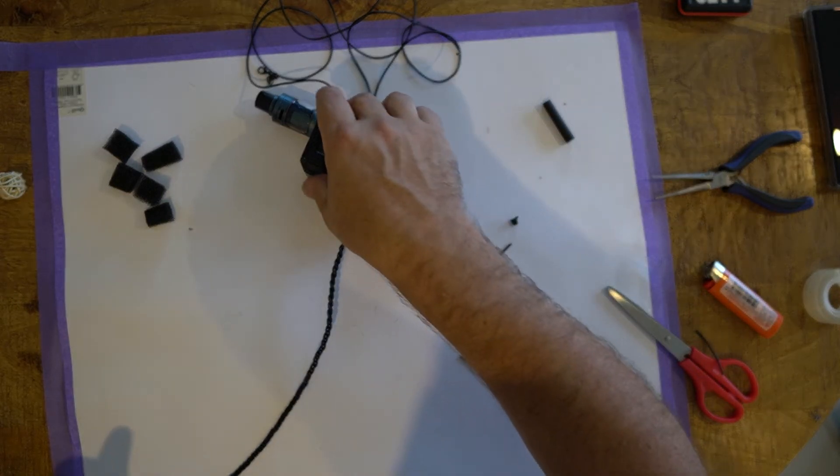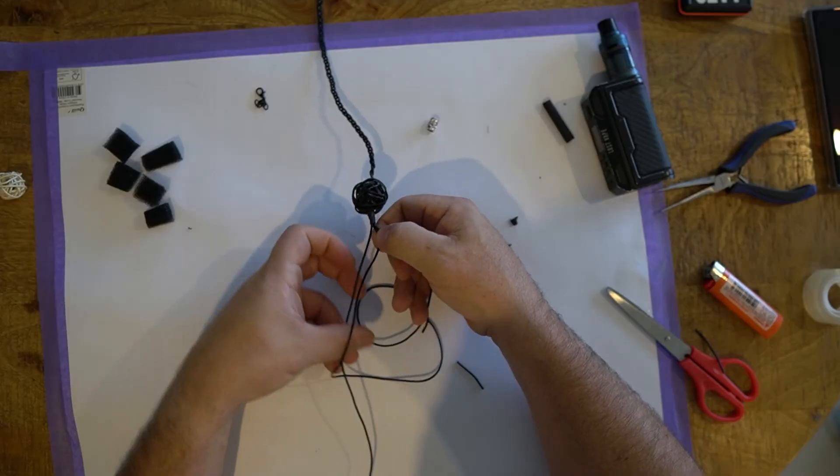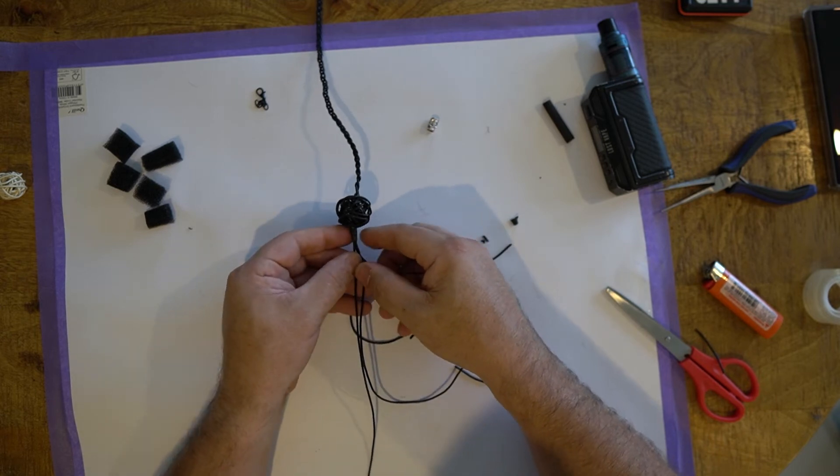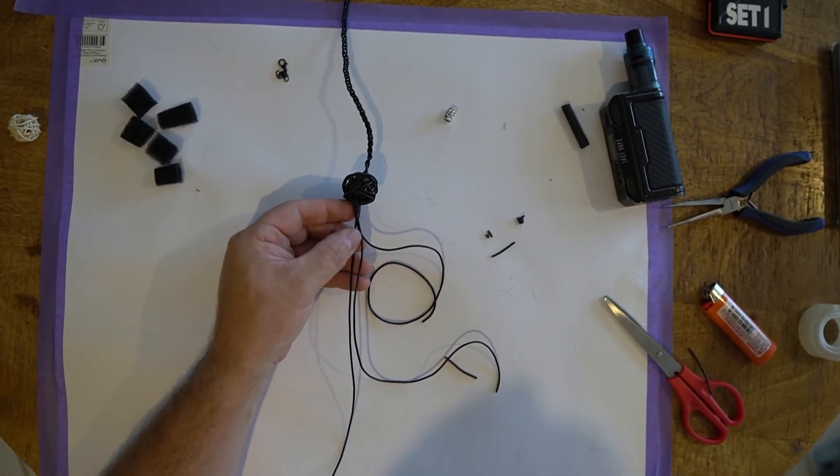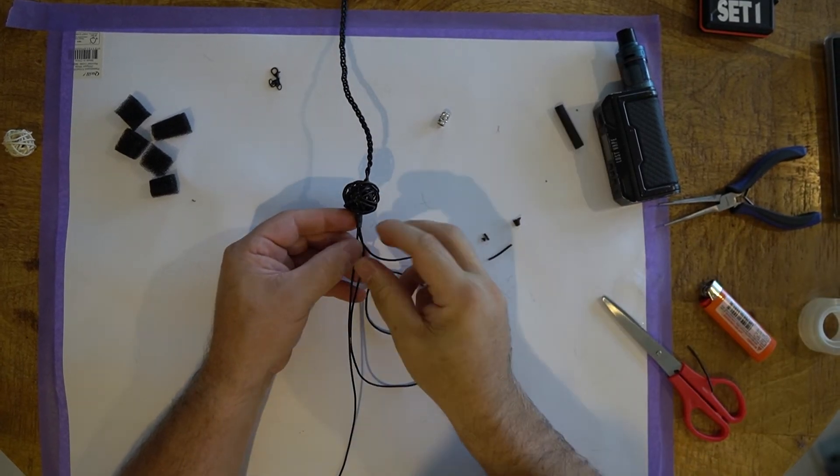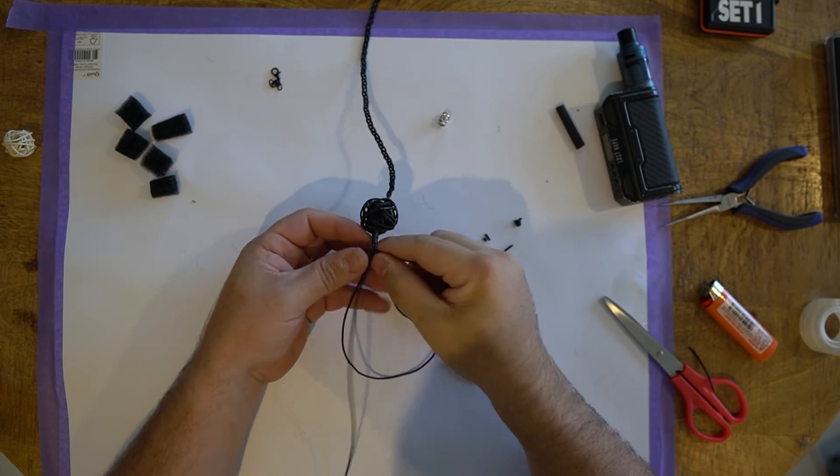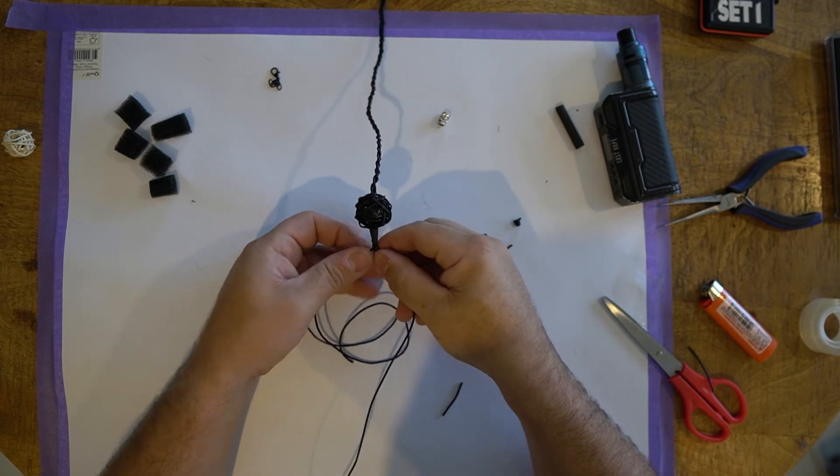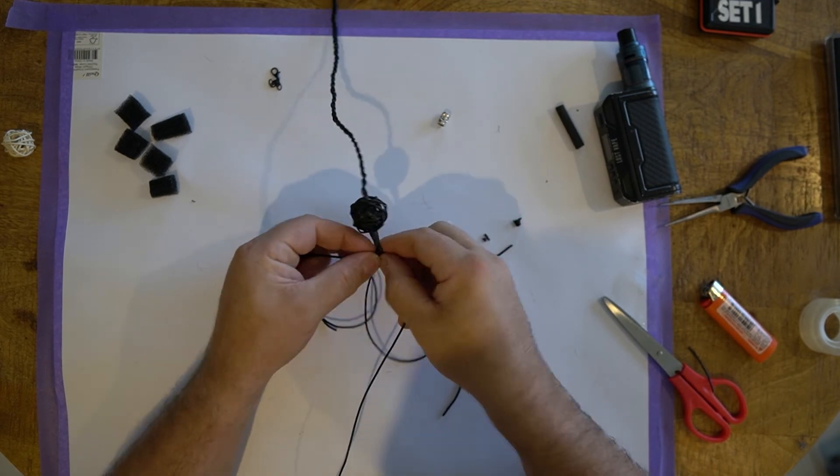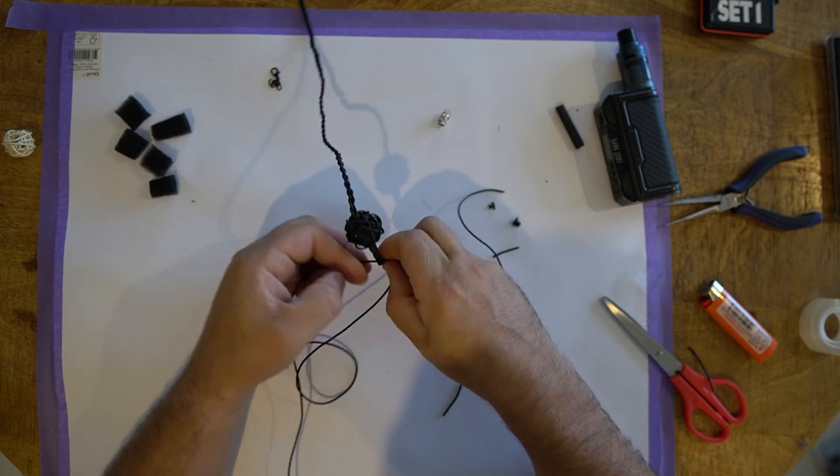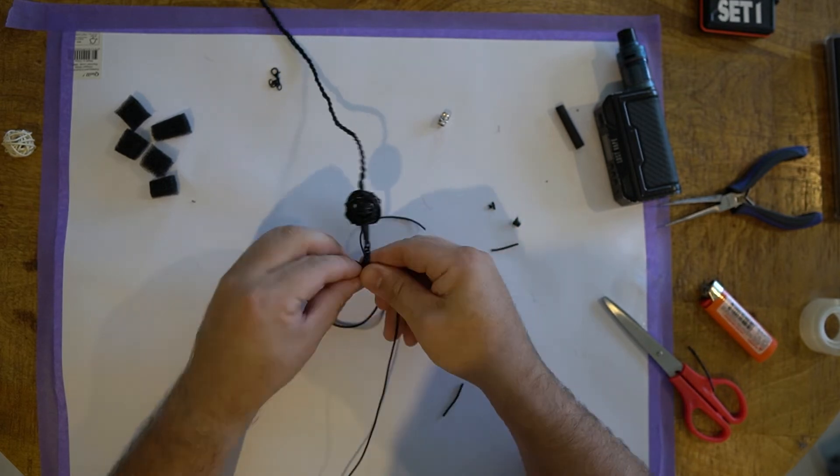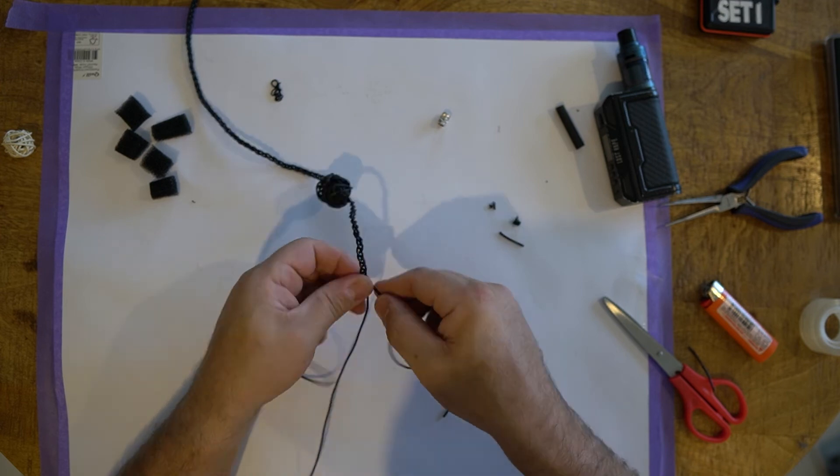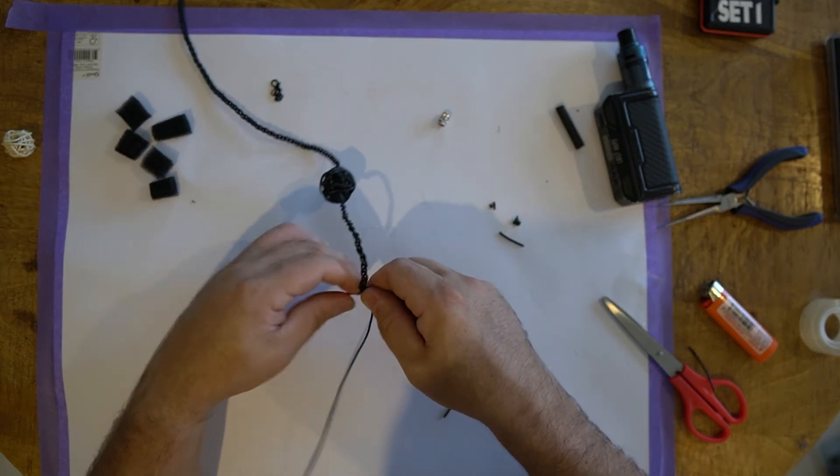And now it's just a case of moving on and braiding the other side. This is obviously the side with the cord. So there we go, and away we go. Same deal - just alternating between crossing the right over the center strand and the left.